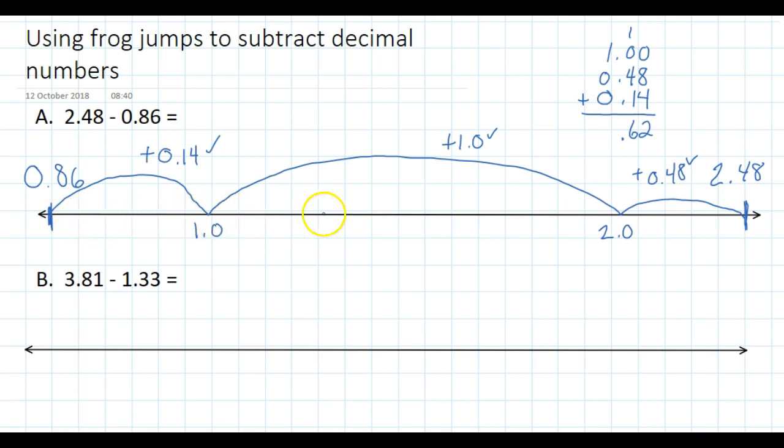There are basically two numbers on the number line to start with. The number I'm starting with is 0.86, which is the smallest of the two numbers, so I write that at this end. At the other end I write the biggest number, which is 2.48.